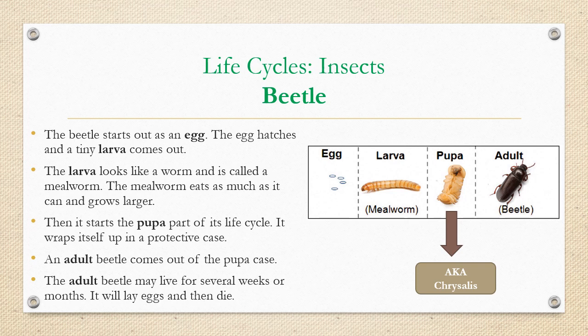What's interesting is that where a human life cycle would last 90 years or something, an adult beetle may live for several weeks or months, then just lays eggs to reproduce and dies. So the life cycle altogether is a lot shorter for insects than it would be for mammals.